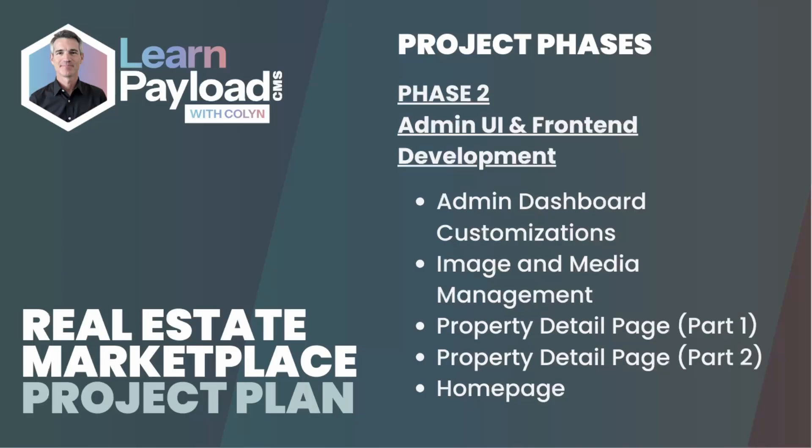Agents need to be able to manage images and media. Then we're going to get into the property detail page — I've split that up into at least two parts since I won't be able to cover it in a single video. Property details will include all of the images with an image gallery, the description, and all the different features of the property: number of bedrooms, bathrooms, square feet, selling price. Maybe we'll have some public API integrations with schools, neighborhood information, and demographics if we have time. Lastly in phase two, we'll finally get to the homepage, which I demo'd as a static version in a previous video.